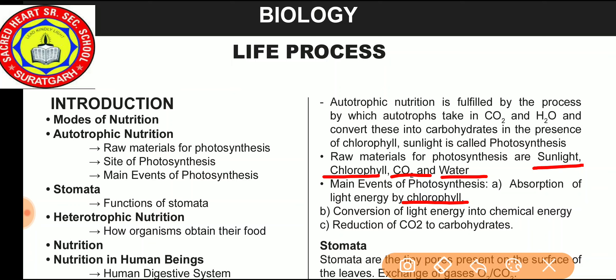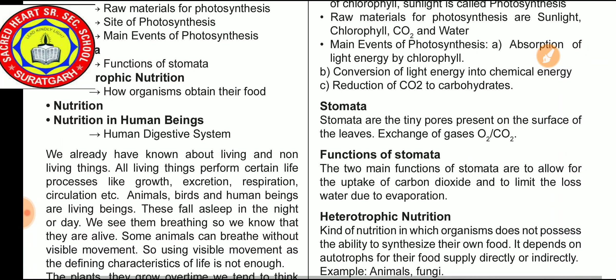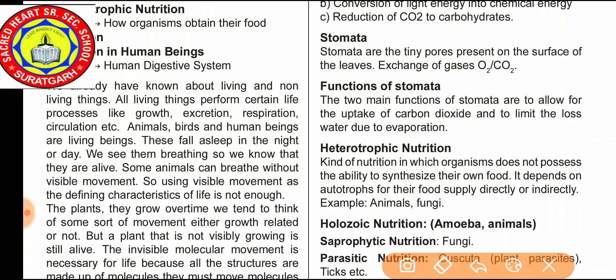Now we discuss one structure present on the leaf, and sometimes also present on the green plant stem — they are known as stomata. Stomata are responsible for gaseous exchange in the plant. Stomata are the tiny pores present on the surface of the leaves for exchange of gases like O₂ and CO₂. The two main functions of stomata are: to allow for the uptake of carbon dioxide, and to limit the loss of water due to evaporation, also known as transpiration.